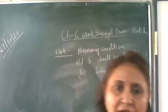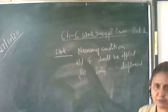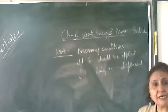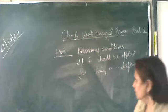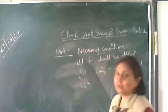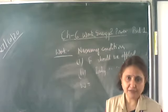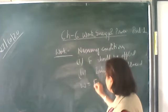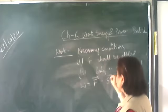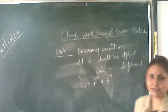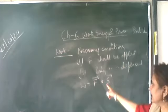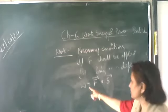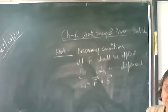Work depends on two physical quantities: force and displacement. Work done is defined as the product of force and displacement. Since both force and displacement are vector quantities, work done is the dot product — the scalar product — of force and displacement. It is F dot S. Two vectors are multiplied, but the product is a scalar quantity.